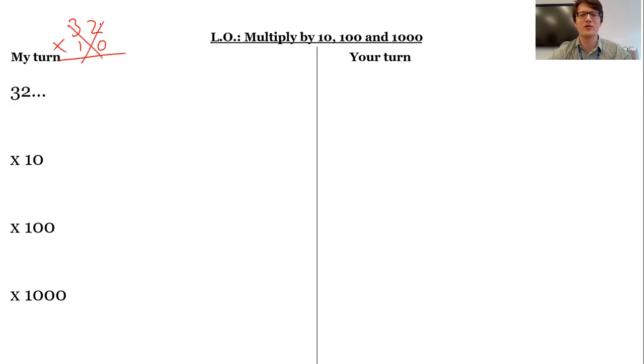So when we're timesing by 10, 100, and 1,000, we are going to be thinking very carefully about place value. Now, if I'm struggling with this, the first thing I'm going to do for myself is I'm going to draw a place value grid.